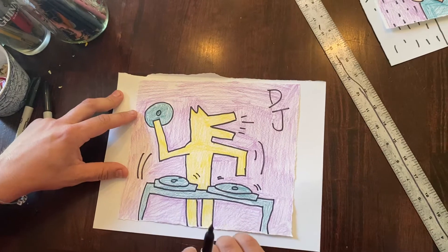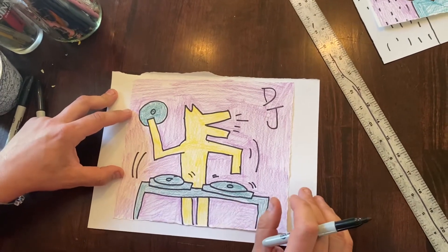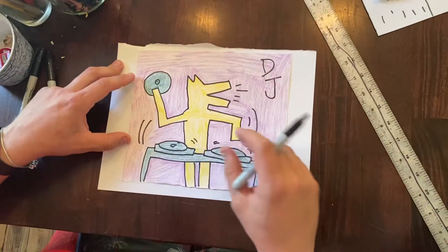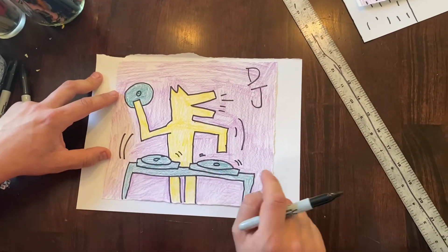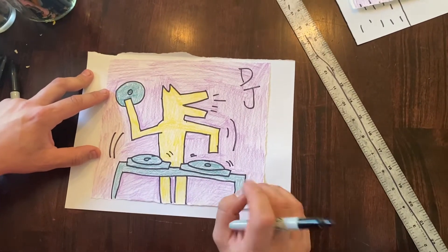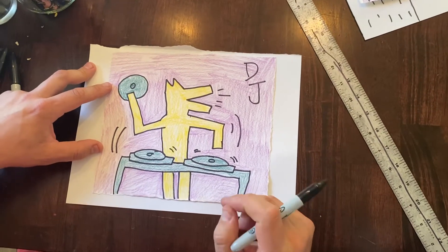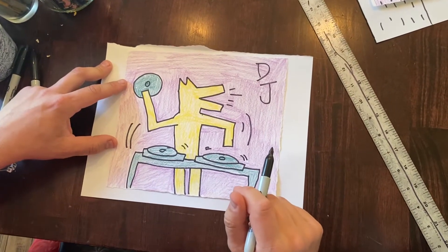These things are called turntables. We used to have these things called records. They played music. Now we don't have that, everything's in the cloud. So let's get started.